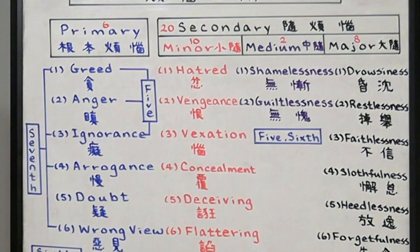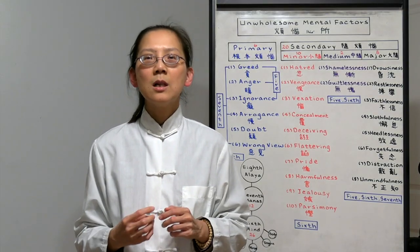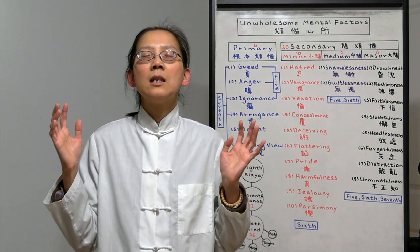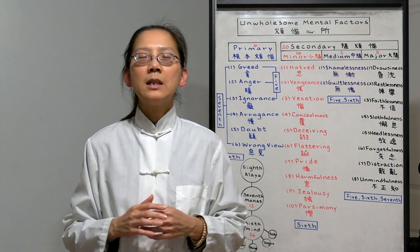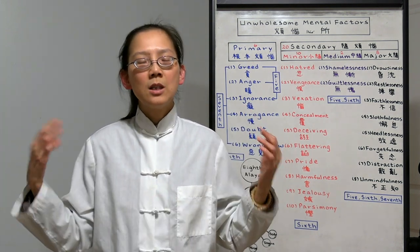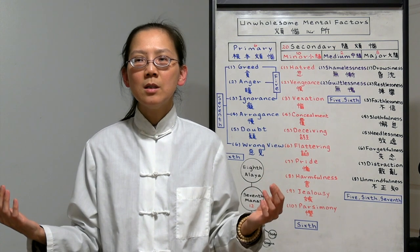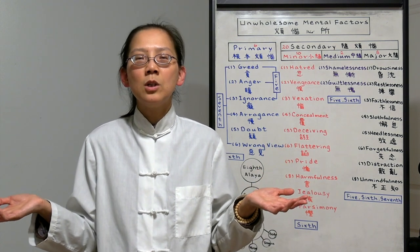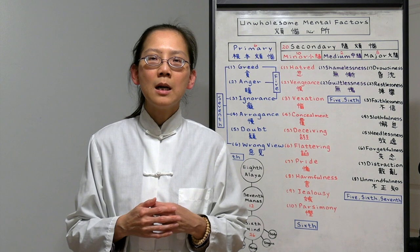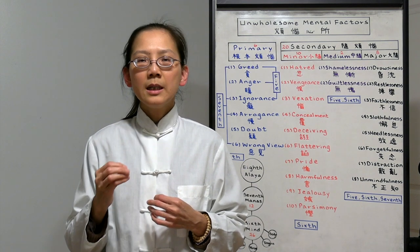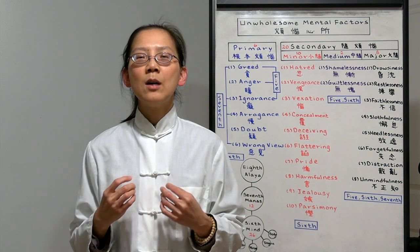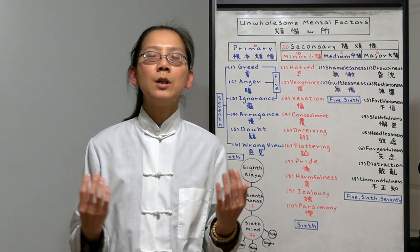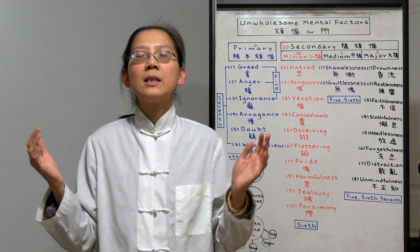Number five is doubt. We have a lot of doubt about ourselves. Doubting our ability to become a Buddha. We are doubting the teacher. We don't think the teacher has the right cultivation. So we don't believe in the teaching. And we doubt the Dharma. We don't think the Dharma can really be applied in real life. If we have doubt, we are constantly unsure about what to do. And always confused.